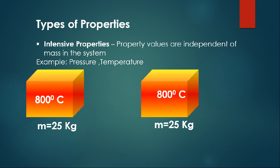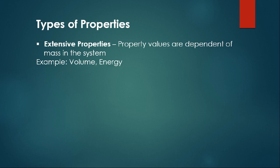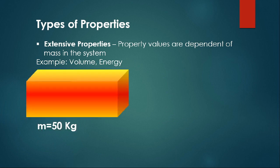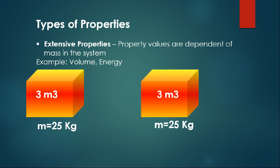Extensive properties are dependent upon the mass of the system — if you take some mass from the system, the property value changes. Examples are volume and energy. Consider the same metallic body with a mass of 50 kg and a volume of 6 cubic meters. If we cut it into two pieces of 25 kg each, the volume also becomes half — each piece will have a volume of 3 cubic meters. So when mass is reduced, volume decreases too.